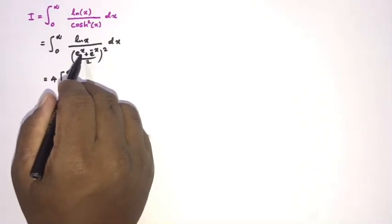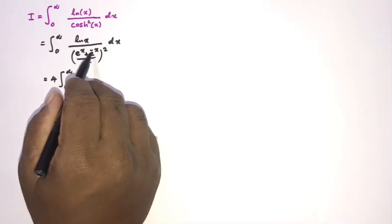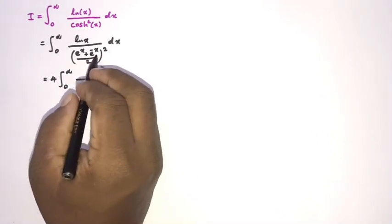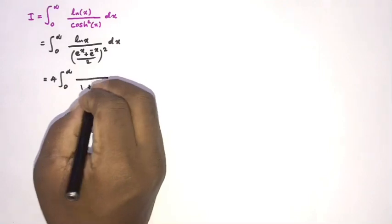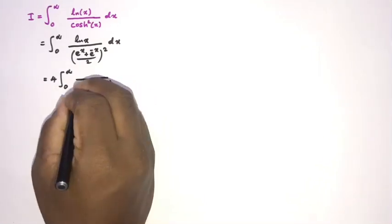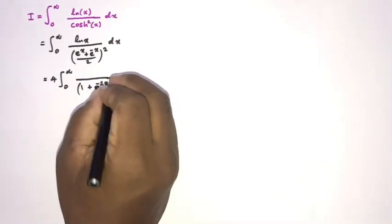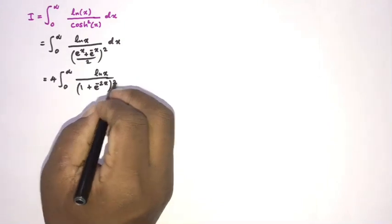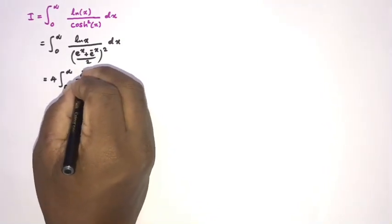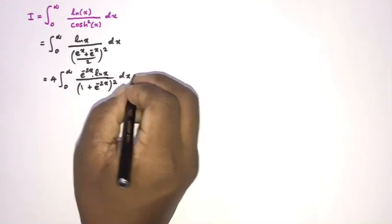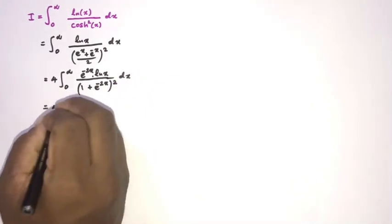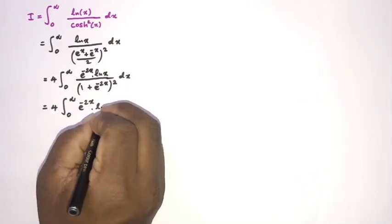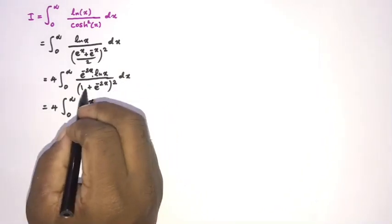Inside the parenthesis we have eˣ + e⁻ˣ. Dividing through by eˣ gives 1 + e^(−2x), all squared, multiplied by e^(−2x) · ln(x). So we have 4 times the integral of e^(−2x) · ln(x) over (1 + e^(−2x))² dx.